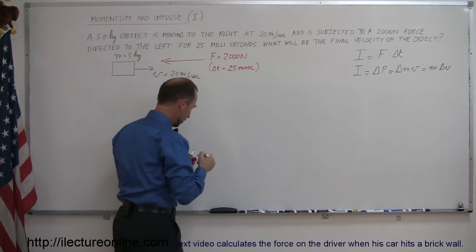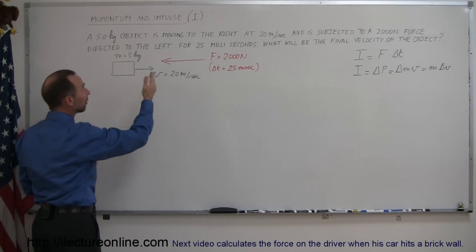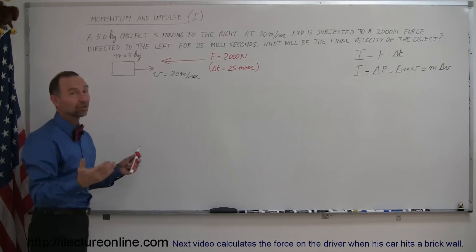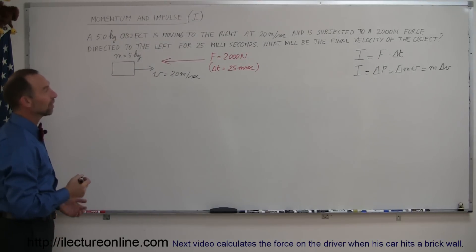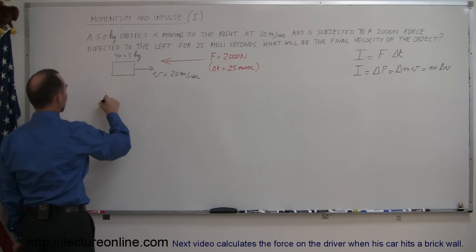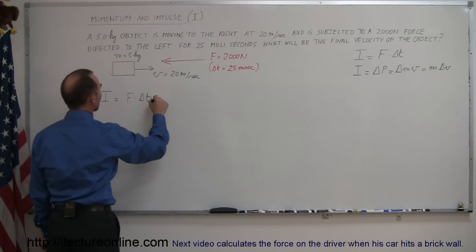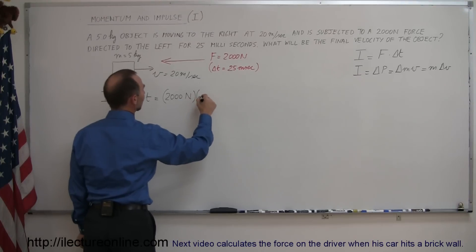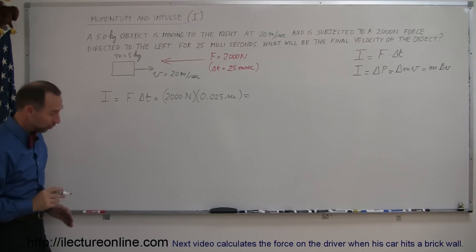That's 25 one-thousandths of a second. So is it enough impulse to stop the object? Is it enough to stop it and also push it backwards? Or is it only enough to slow it down so it continues to the right at a slower velocity? That's what we're trying to find out. Using our definition, since impulse is a change in momentum, impulse equals force times delta T, which is 2,000 newtons multiplied by 25 milliseconds — that's 0.025 seconds — and that gives us the impulse, which is also the change in momentum.